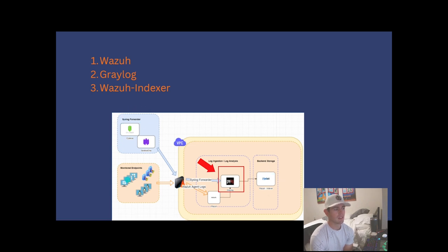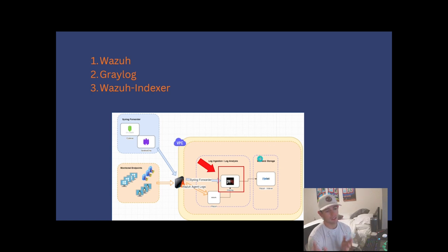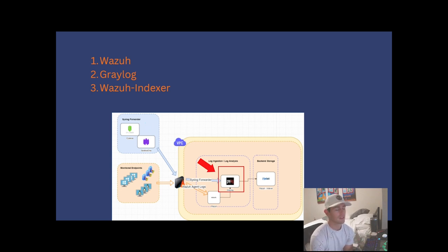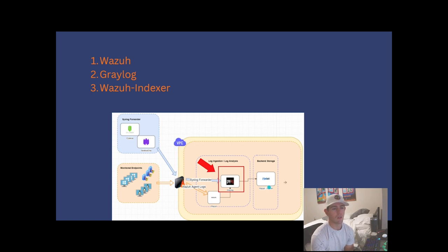Graylog will ingest that JSON, run it through its pipelines — which we'll cover in later videos — and then write it to our Wazuh indexer. We're essentially putting Graylog in the middle between any of our raw logs and our backend storage, because we don't just want to receive logs in their raw format. That can be a nightmare when building dashboards and alerting. Your future self will hate your past self if you don't take the time to have a universal procedure for cleaning up logs. We can also collect syslog messages — third-party forwarders like Cybereason and SentinelOne support this type of functionality.